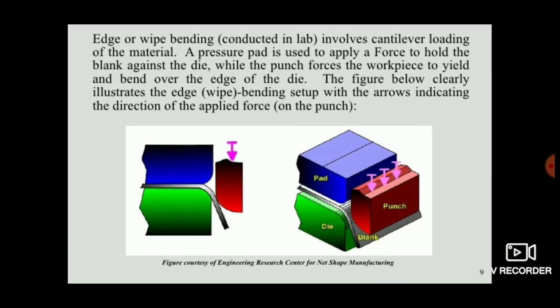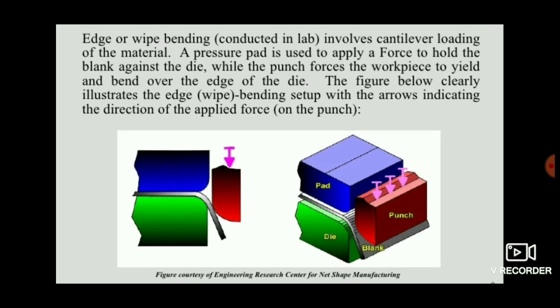This edge bending process is applied over the blank. The process involves critical parameters such as the punch force and the clearance between the die and the punch.